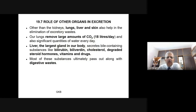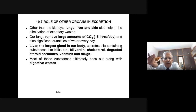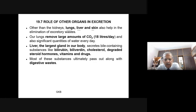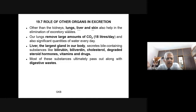Now let us study the role of other organs in excretion. Other than kidneys, the lungs, liver, and skin also help in the elimination of excretory waste. Our lungs remove about 18 litres of carbon dioxide per day during respiration, along with significant quantities of water. Carbohydrate and fat metabolism produce carbon dioxide and water as waste, while protein metabolism also produces nitrogenous wastes like urea, uric acid, and ammonia. The liver — the largest gland in the body — secretes bile containing substances like bilirubin, biliverdin, cholesterol, degraded steroid hormones, and vitamins, some of which are eliminated along with digestive waste.